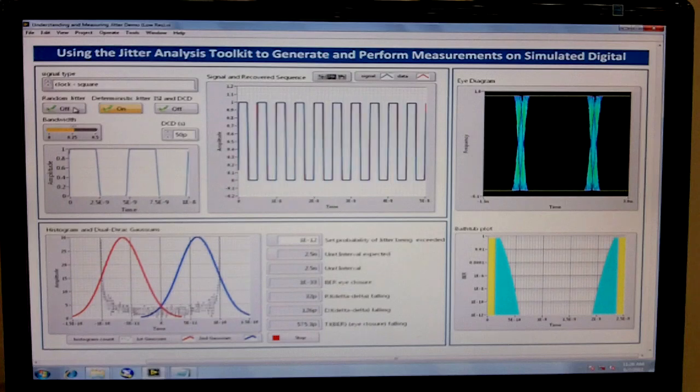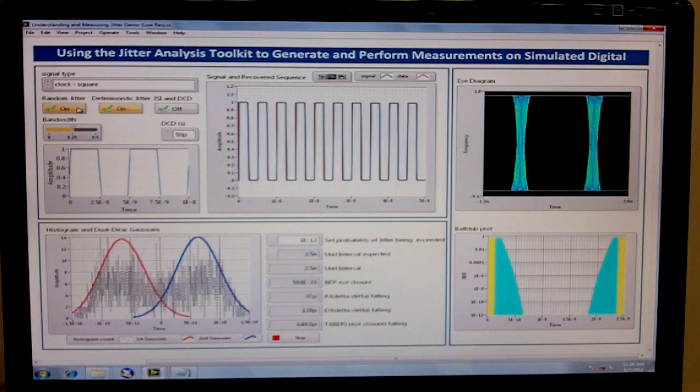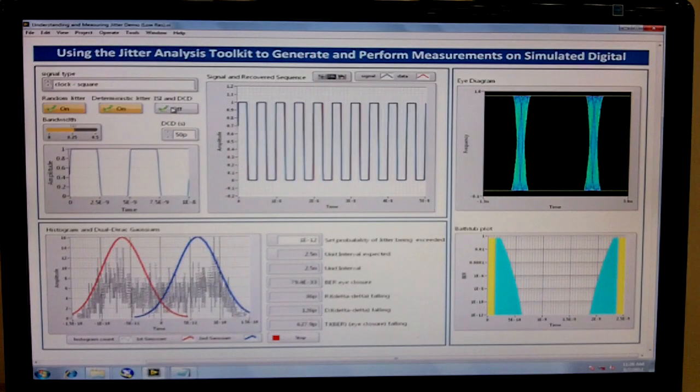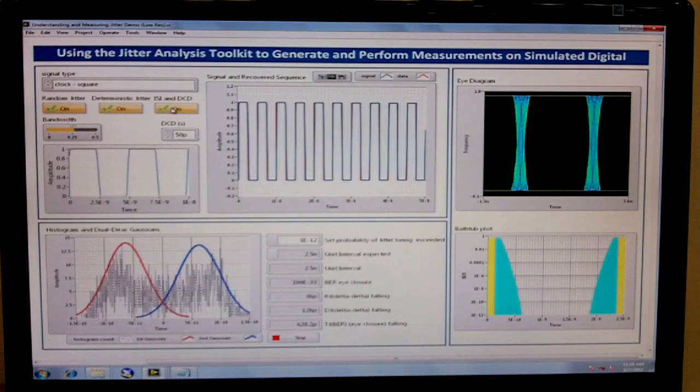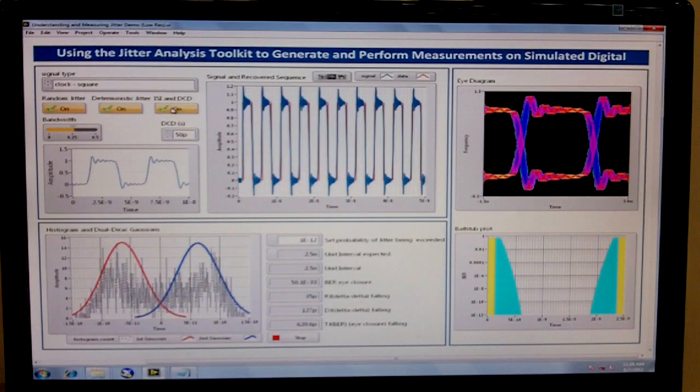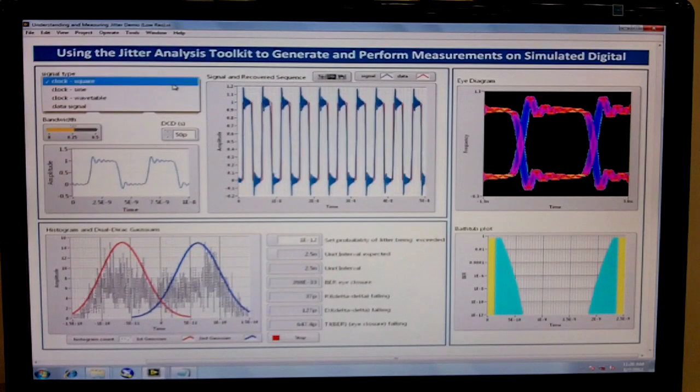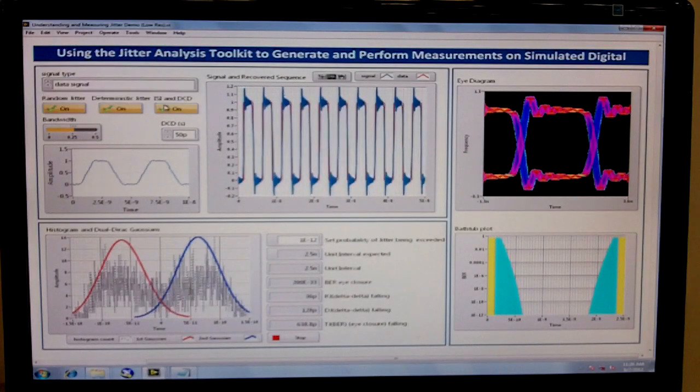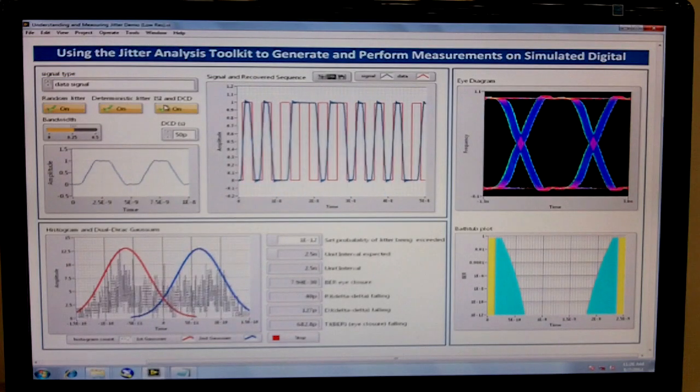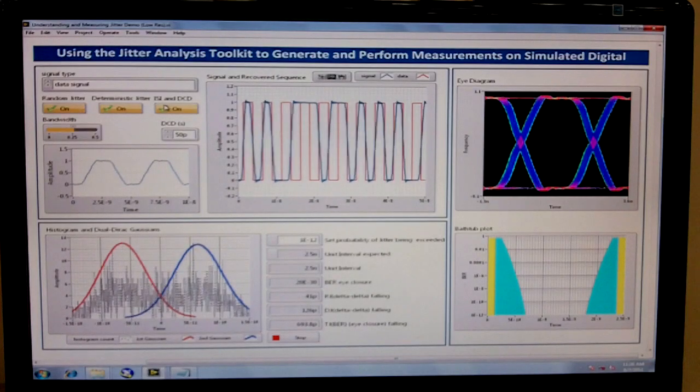And we can actually go ahead and one by one add in the random jitter components and then intersymbol interference and duty cycle distortion, which you'll only see if we change from a square wave over to a data signal that has different types of transitions rather than back and forth between ones and zeros.